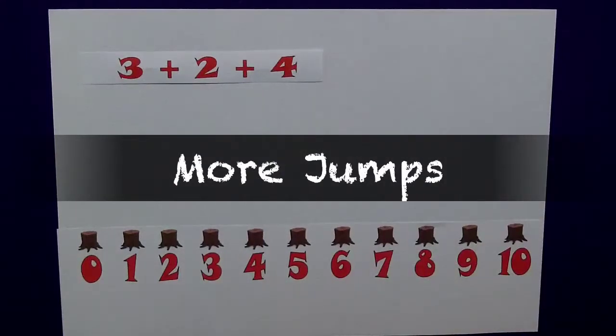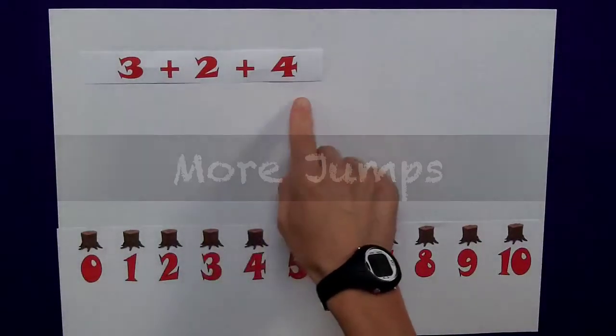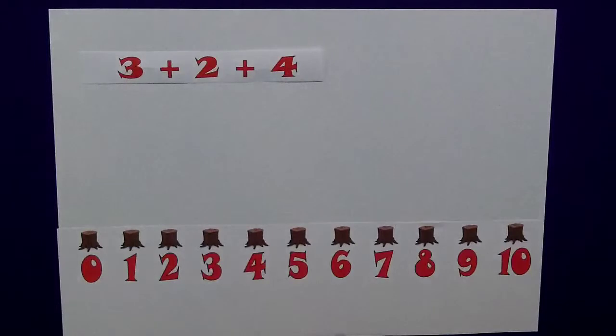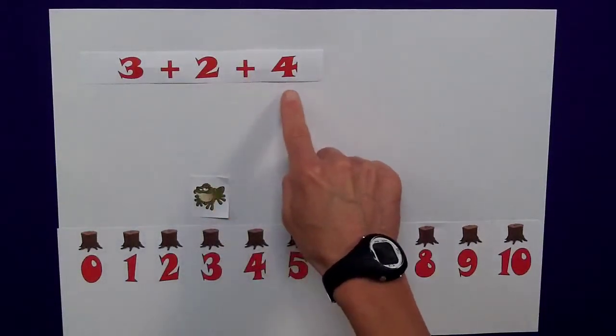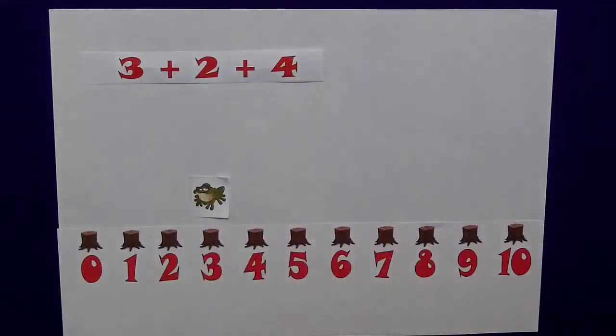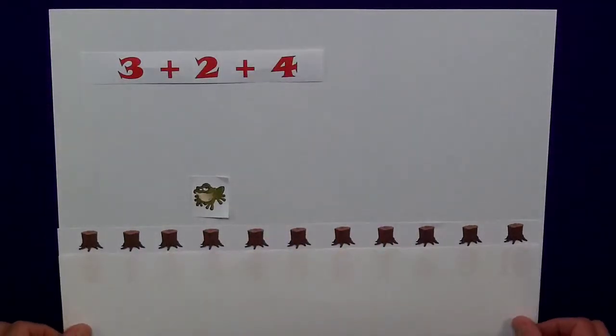I think you've probably got that, so let's try something with a couple of jumps in there. Let's apply the same principles, Freddie here is going to start at 3, his first jump will be a jump of 2, followed by a jump of 4. Pause the clip, let's cover up the numbers, and let's see how you get on.